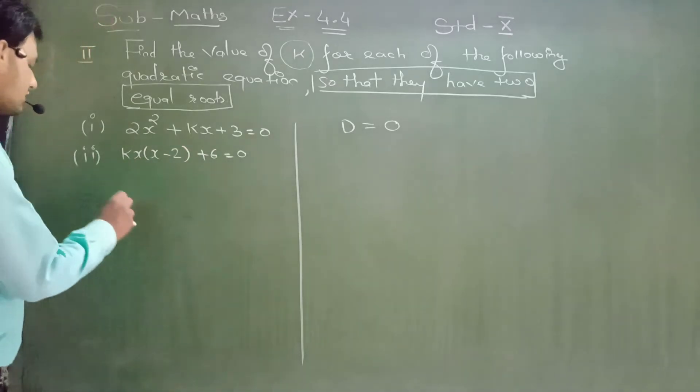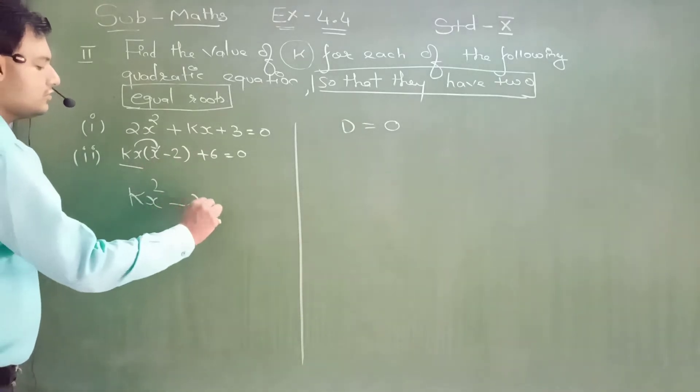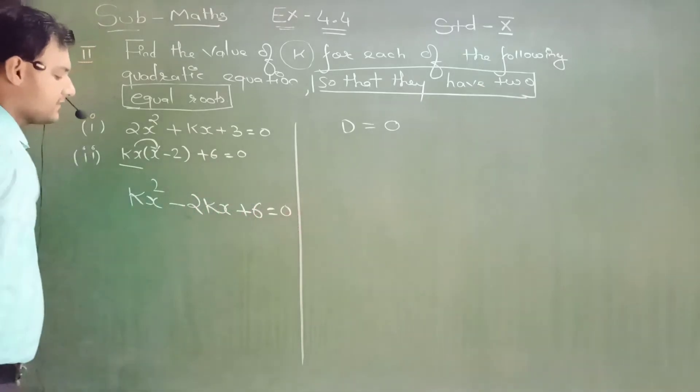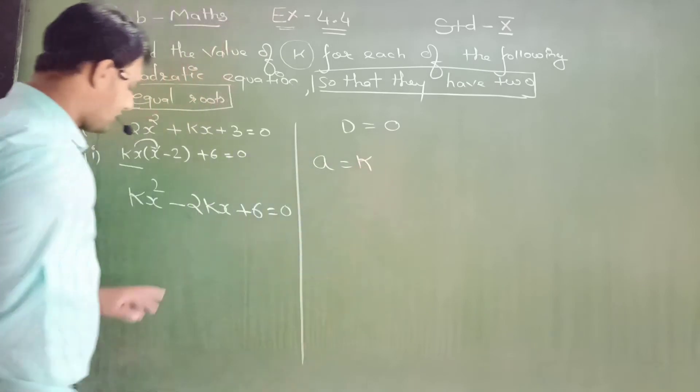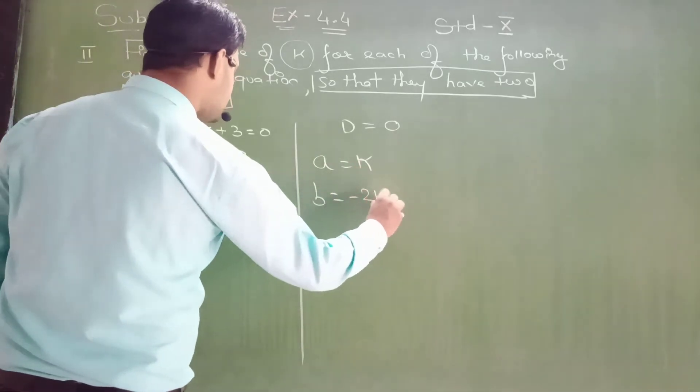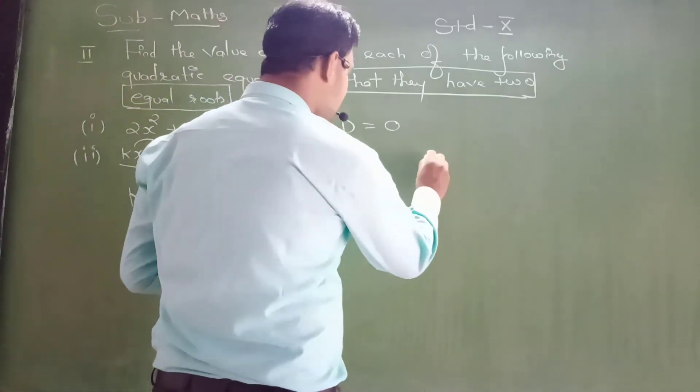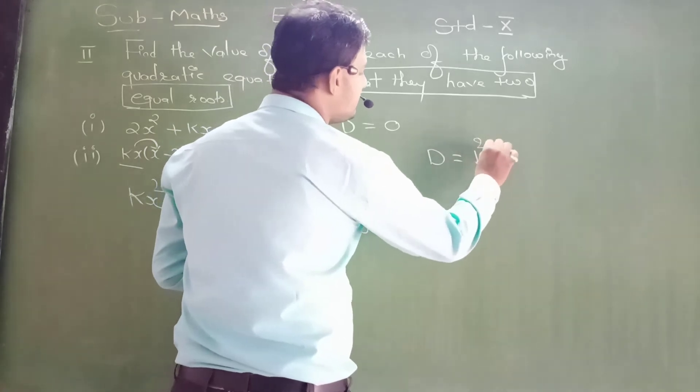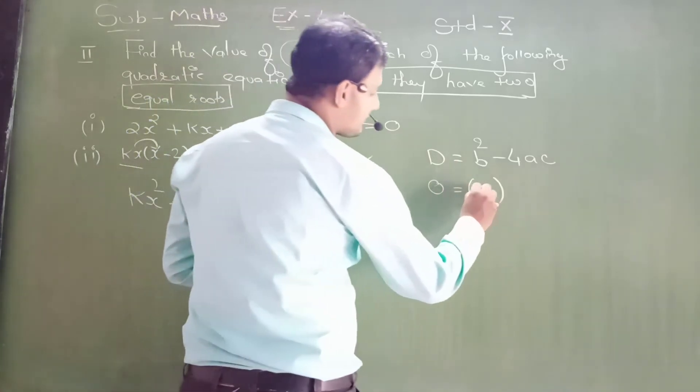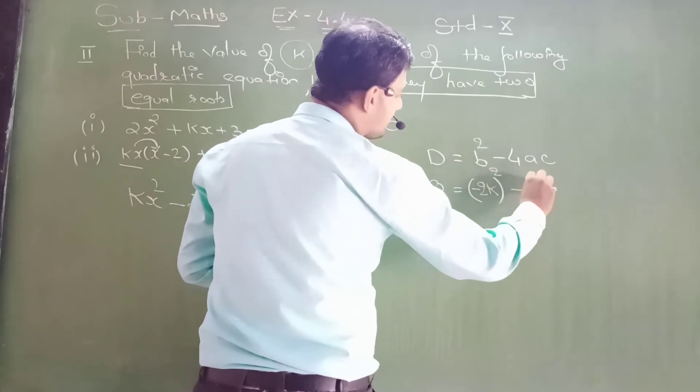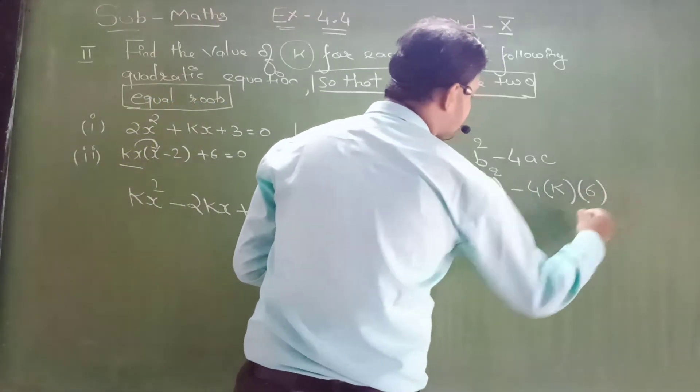Same D equals zero. Here, see, it's not given in quadratic form. First you have to change to quadratic form: kx² - 2kx + 6 = 0. Now it is in quadratic form. What is a, dear students? Your a is k. What is your b? Your b is -2k. What is your c? Your c is 6.